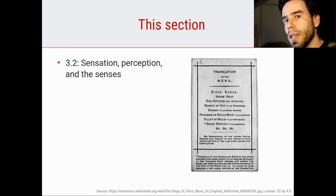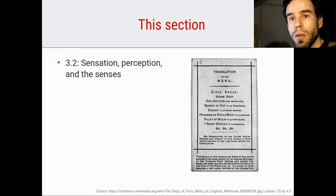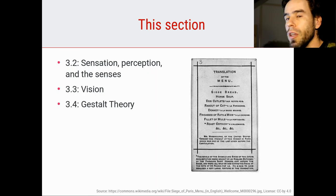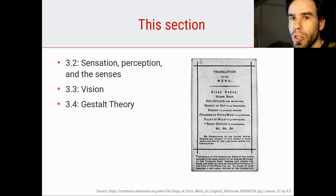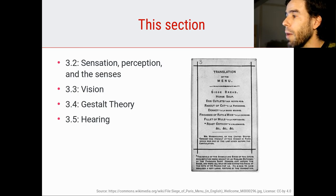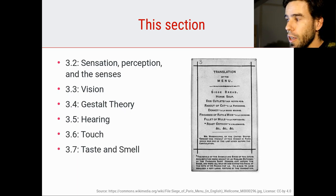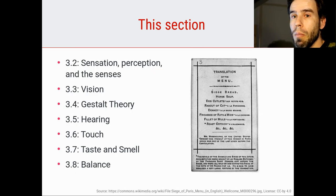So what are we going to talk about in this section? In video 3.2, the next video, we're going to first briefly talk about what sensation is and what perception is, and the various senses that we have. Then in video 3.3 we're going to move to vision — visual perception — followed in video 3.4 by Gestalt theory, which is a theory describing how we process visual information. Then we're going to switch modalities in section 3.5 and talk about hearing, followed by touch in 3.6. Video 3.7 is going to discuss taste and smell, and finally in 3.8 we're going to talk about balance.